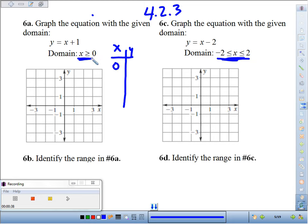Maybe I'll pick a couple more values. x has to be greater than or equal to 0, so maybe I'll pick 1 and 2 for x. So if I look at 0 first, 0 plus 1 is 1, 1 plus 1 is 2. If I plug in 2, 2 plus 1 is 3. I start graphing these points: 0, 1; 1, 2; 2, 3.